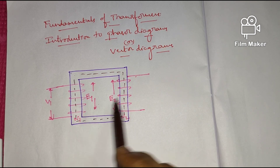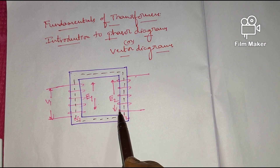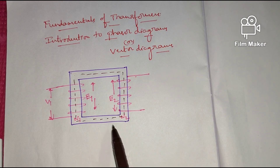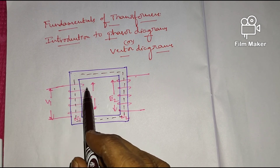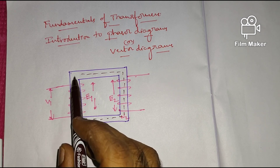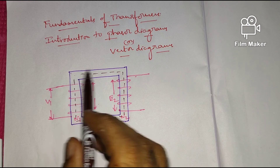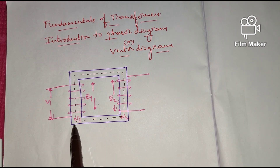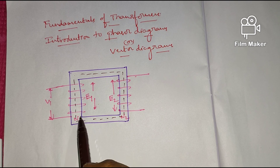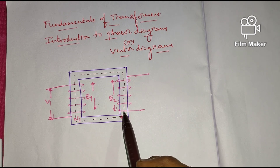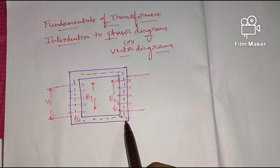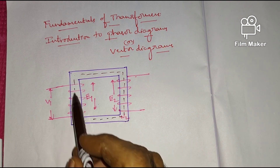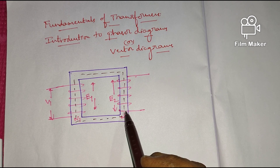E1 is the EMF induced in the primary winding and E2 is the EMF induced in the secondary winding. When supply is given, a small amount of current will be flowing through the primary winding which results in the development of a flux. The core is used as a medium for the flow of flux between primary winding and secondary winding. The primary winding turns are considered as N1 and secondary winding turns as N2. When this flux links with the windings, obviously EMF is going to be induced.